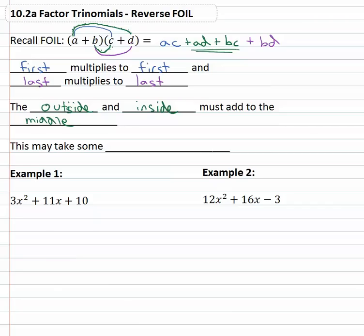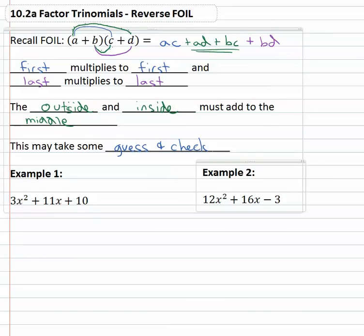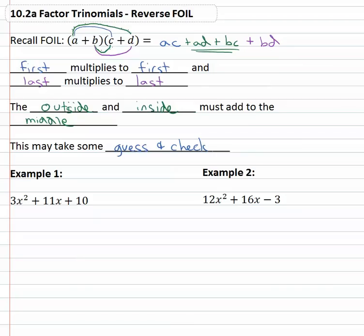So what we're going to do is do some guess and check using this pattern to identify what binomials were multiplied together to give us the trinomial in the problem. So if we have the trinomial 3x² + 11x + 10, we're asked to factor it. That means there's some binomials that were multiplied together which gave us 3x² + 11x + 10.